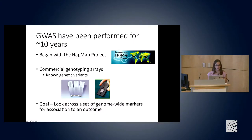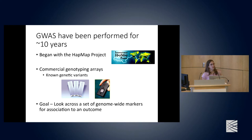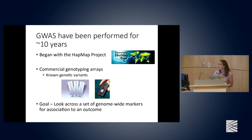GWAS have been performed for over 10 years. It started with the HapMap Project, whose goal was to catalog the common genetic variation within the human population. The SNPs found from HapMap were put on commercial genotyping arrays, and those arrays were genotyped in many studies to perform tests for association with your outcome of interest across genome-wide markers.